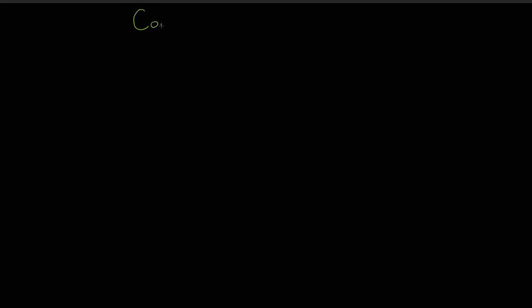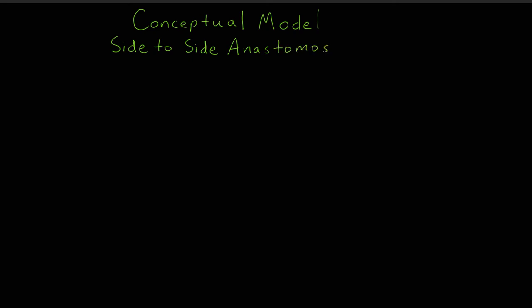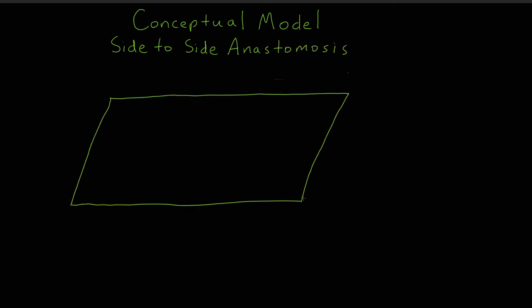In order to make sure that we are all on the same page, let's take a minute to orient ourselves to the conceptual model we will be using to understand the anatomic relationships of our bowel anastomosis. In this model, the surgeon plans to perform a side-to-side anastomosis. The patient is lying supine on the operating table. We will use the standard anatomic terminology with respect to the patient. The model is being viewed from the surgeon's point of view, who is standing on the right side of the operating table.